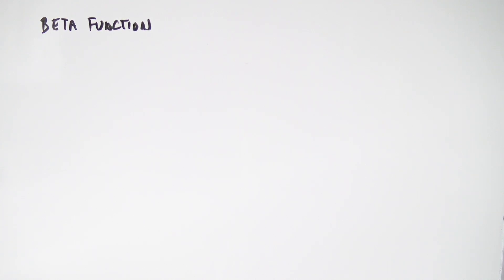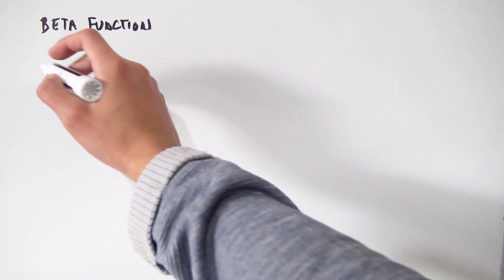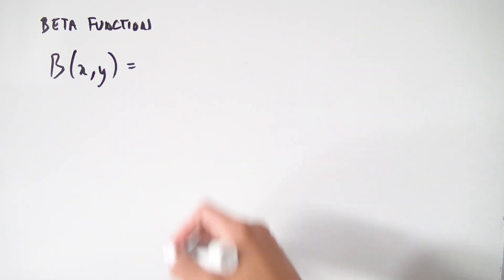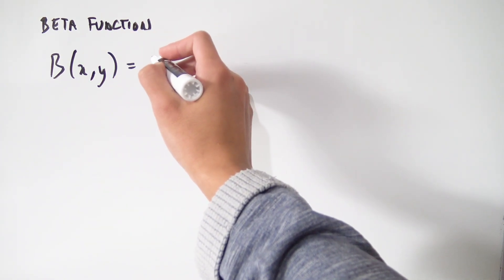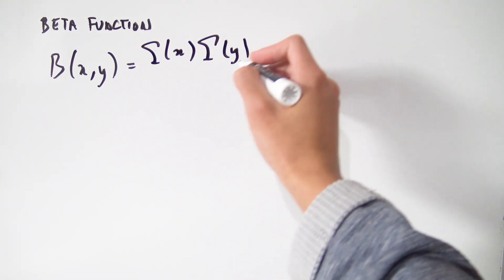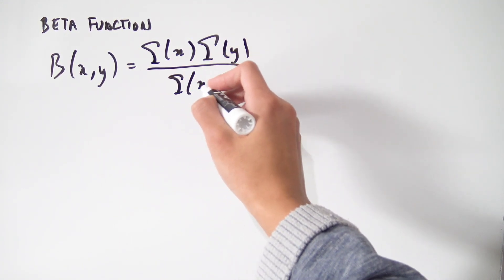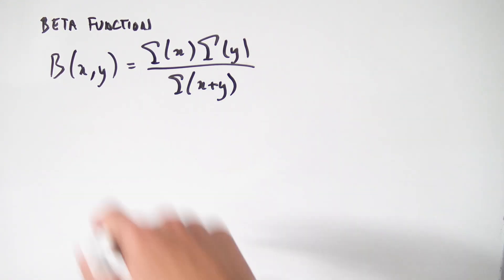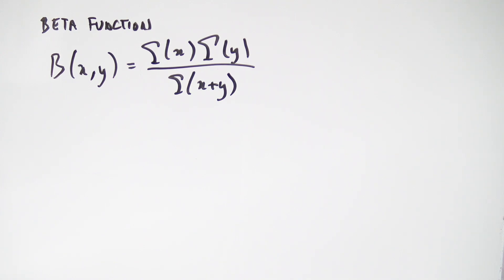Hello everybody, and today I'm going to be deriving an integral representation for the beta function. If you've come across the beta function already, you've probably seen its nice relationship with the gamma function. If you have beta of two variables x and y, you can rewrite it in terms of gamma functions: gamma(x) times gamma(y) over gamma(x+y). Today we're going to use this to find an integral representation for the beta function.